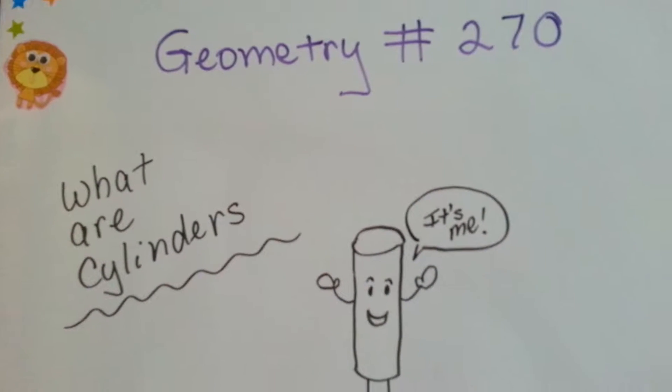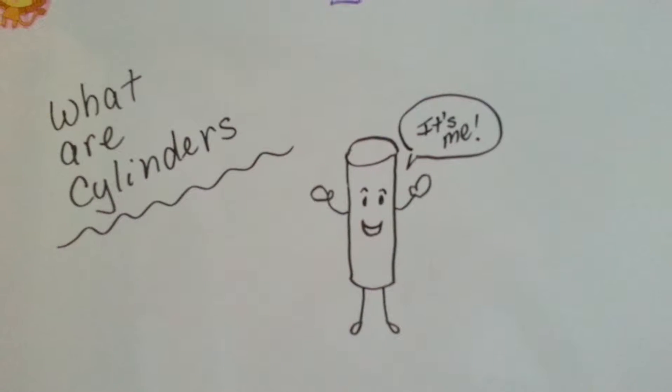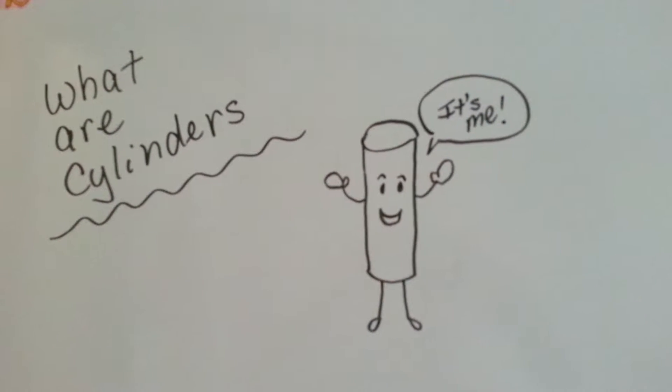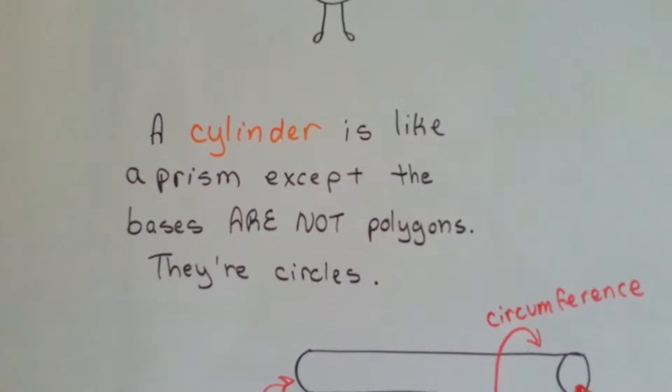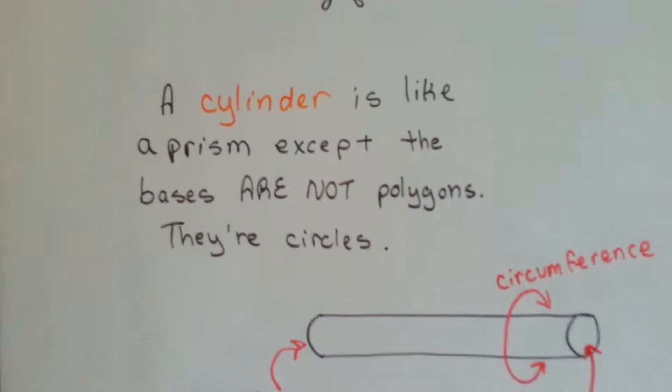Geometry 270, what are cylinders? Oh, it's him! That's a cylinder. It's like a prism except the bases are not polygons, they're circles.